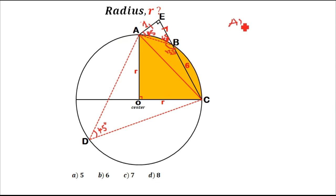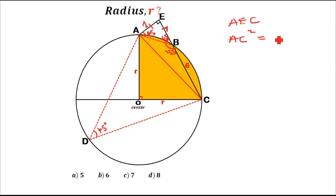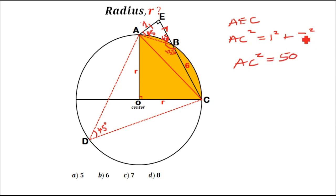Now looking at triangle AEC, it is a right-angle triangle, so we can find the length AC — the hypotenuse. AC² = AE² + EC² = 1² + 7² = 1 + 49 = 50.